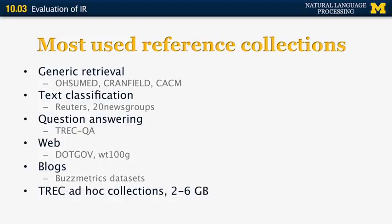For ad hoc information retrieval or document retrieval, people use the TREC collections, which are relatively small in size — 2 to 6 gigabytes. For the web, they use the TREC web collections, which have a lot more data.